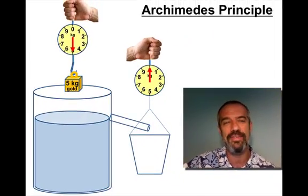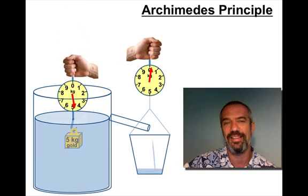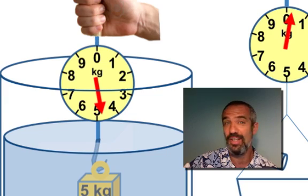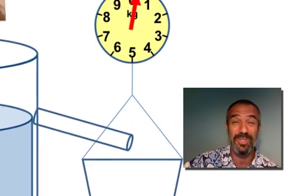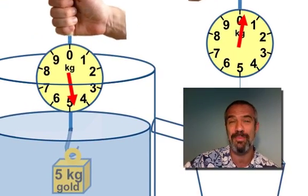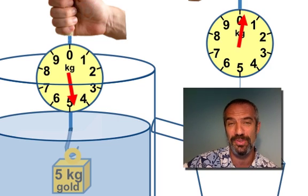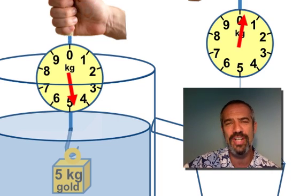Let's see what happens when we lower this 5 kg of gold in there. It did lose weight, but not much. Why? Because it didn't displace very much liquid. It displaced about maybe 0.2 to 0.3 kg of water, and that's precisely how much weight it appeared to lose. So that 5 kg gold bar would not really feel that much lighter if you were trying to pick it up in water, because it's so much denser than the water.